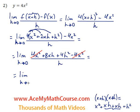So limit as h approaches 0, 4h. Now 8xh divided by 4h is just 2x, and 4h squared divided by 4h is just h, all over h.